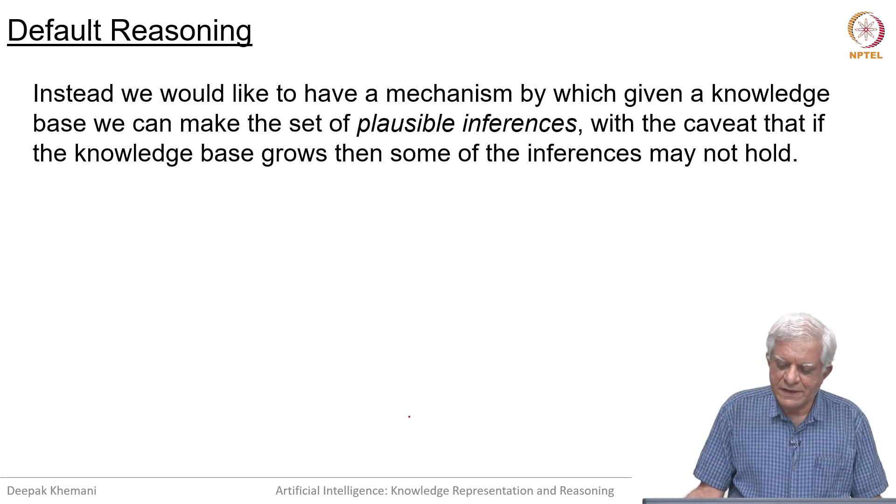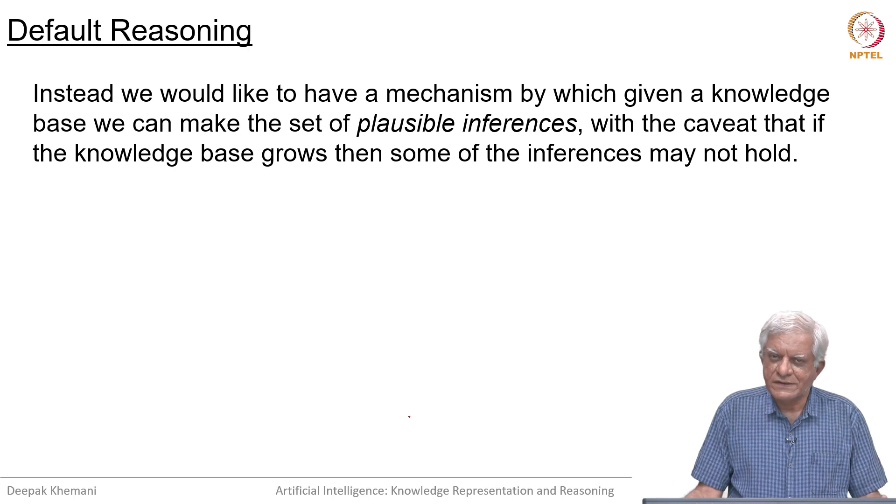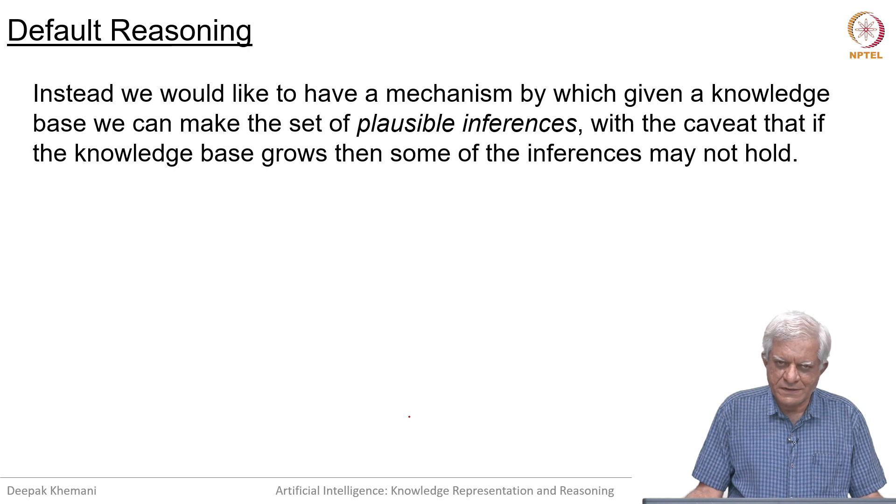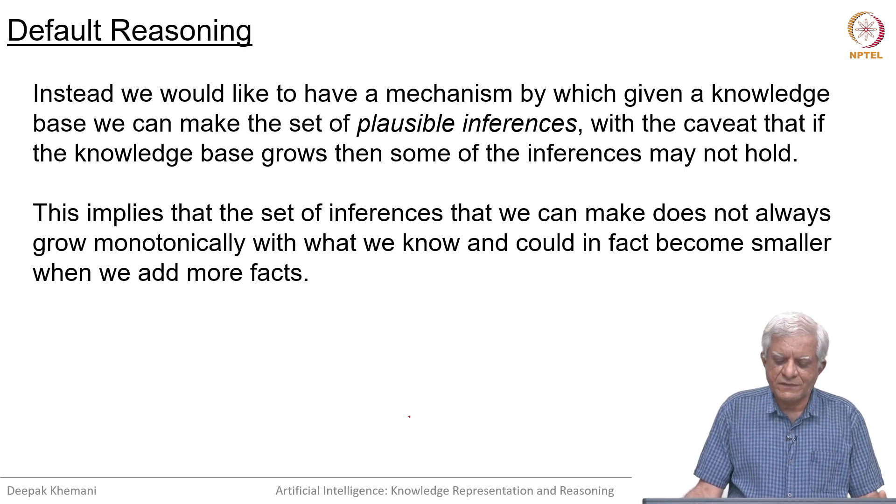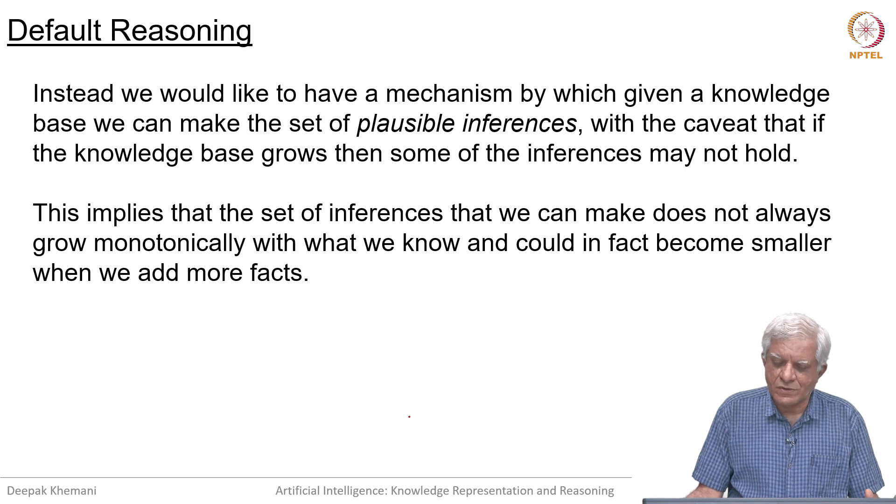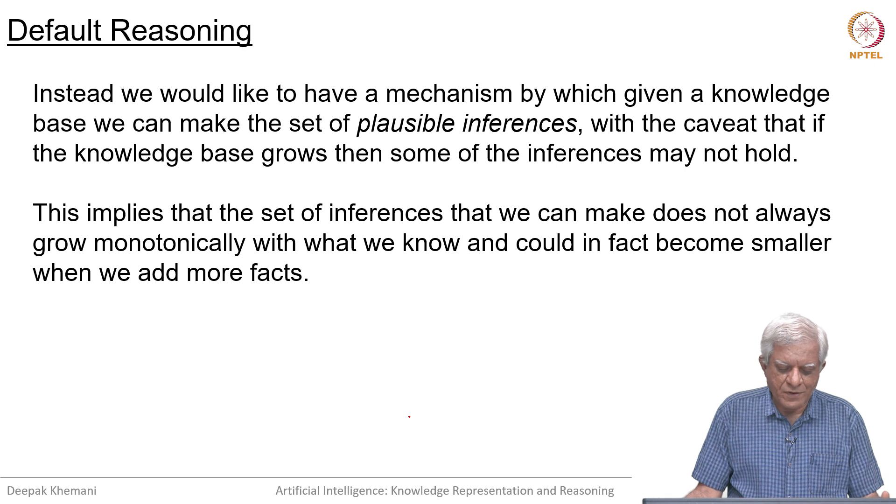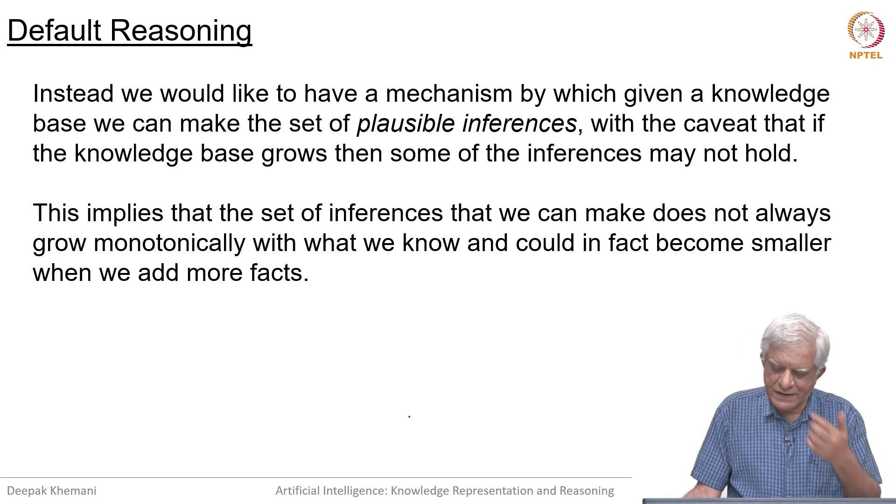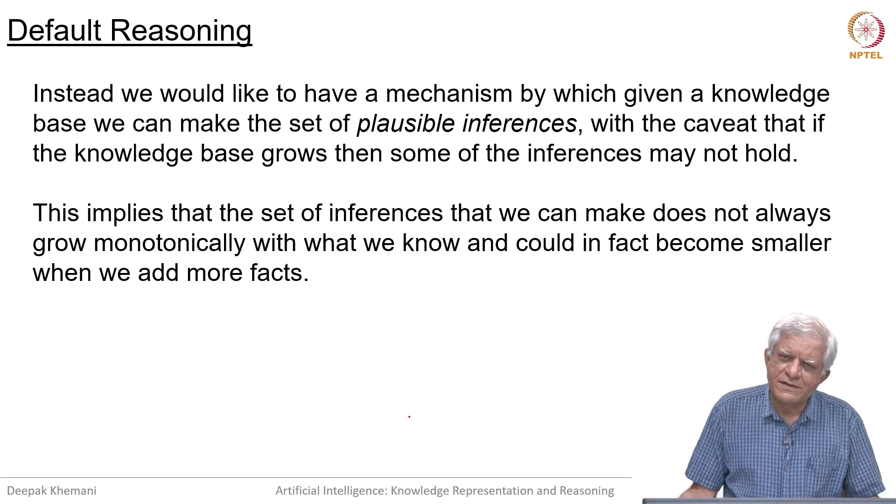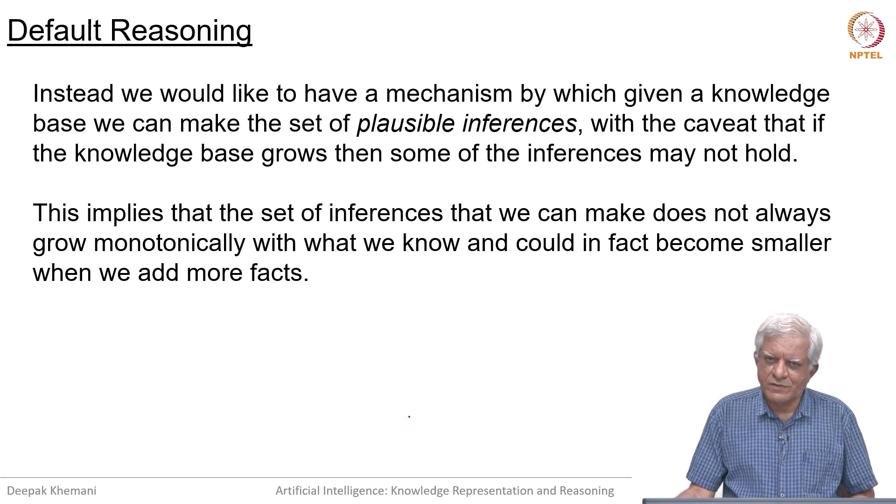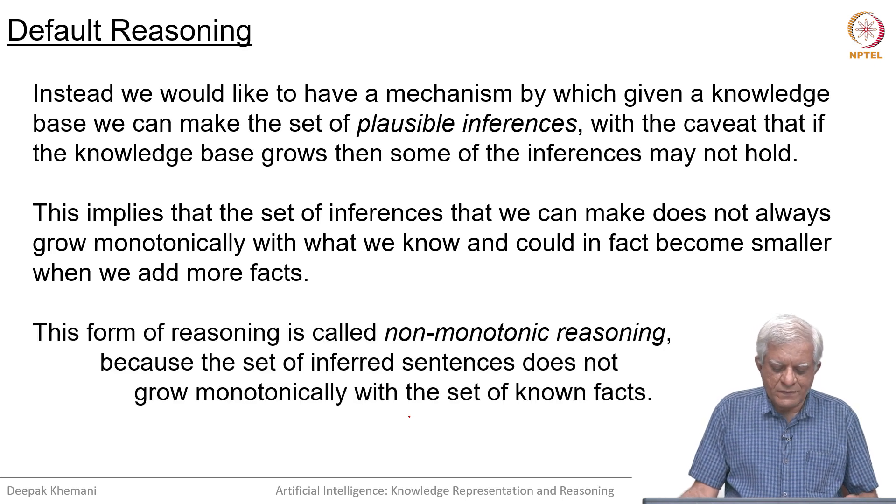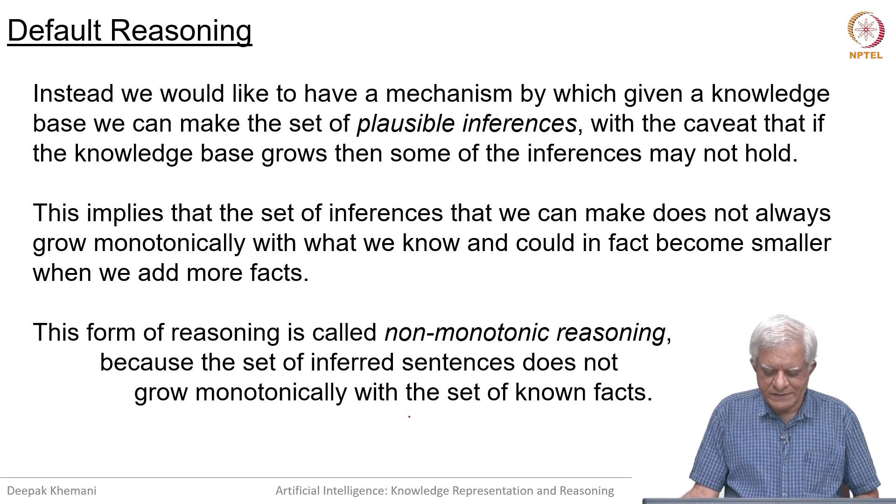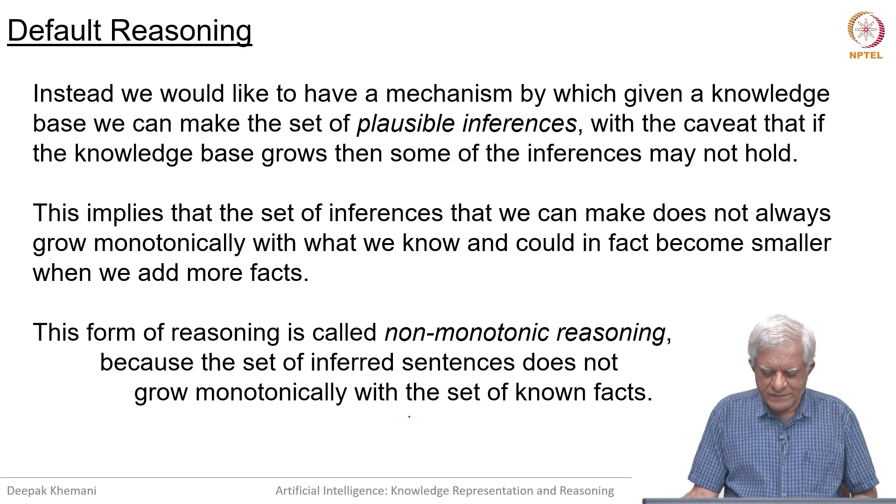Instead we would like to have a mechanism by which given a knowledge base we can make the set of plausible inferences with the caveat that if more knowledge arrives or if the knowledge base grows then some of those inferences may not hold any longer. We should be prepared to do that. This implies that a set of inferences that we can make does not always grow monotonically with what we know and could in fact become smaller when we add more facts to the knowledge base. For example, we can say that peppy is a bird and only later we might say that peppy is a penguin. Then of course, we would have to withdraw the conclusion that peppy can fly. This form of reasoning is also called non-monotonic reasoning because the set of inferred sentences does not grow monotonically with the set of known facts.